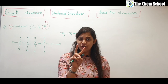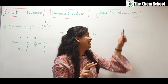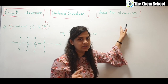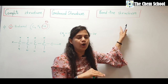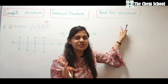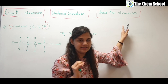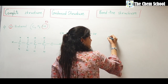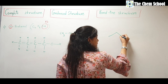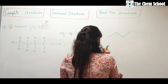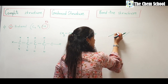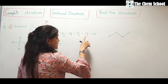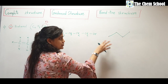For the bond line of n-butanol, whenever you have more than two carbons, start writing a zigzag pattern. Most organic compounds are three-dimensional, which is why we use zigzag. With four carbons, draw four zigzag points — one, two, three, four — then to the fourth carbon attach the OH group. That is your bond line structure for n-butanol.